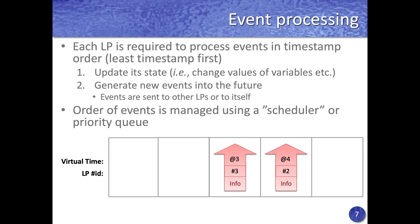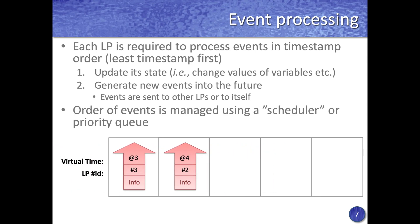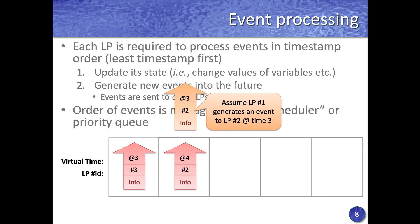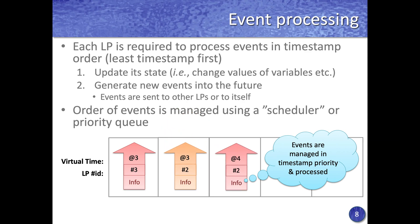For example, the initial processing will focus on events at time 2 and they will be processed. As a result of processing those events, assume that an event at time 3 is generated. This event is inserted into the priority queue, and then events continue to be processed in timestamp order until the simulation ends.